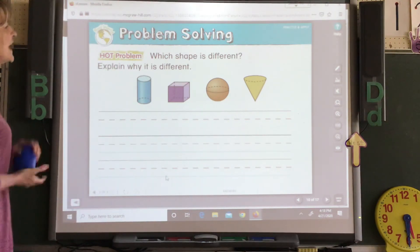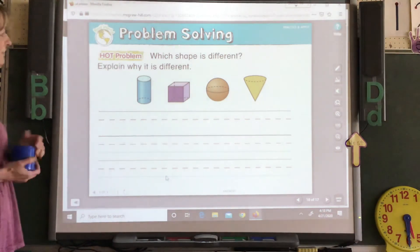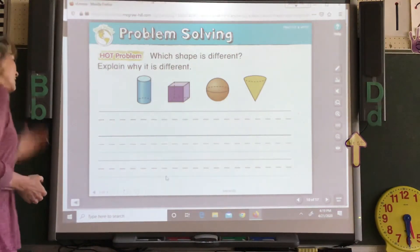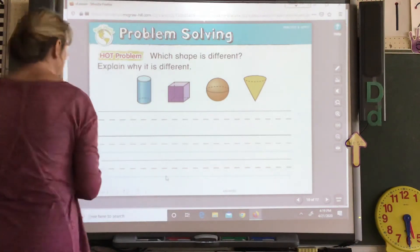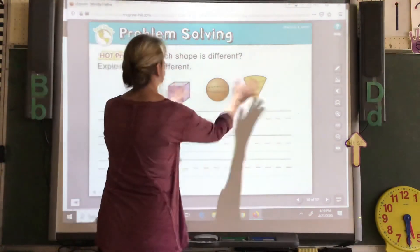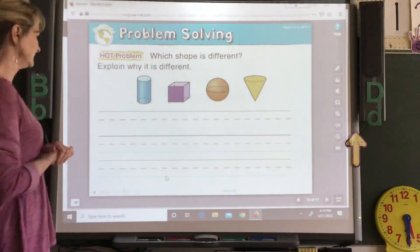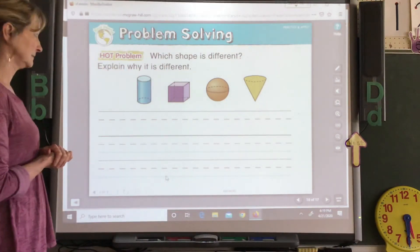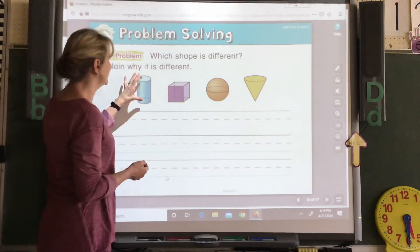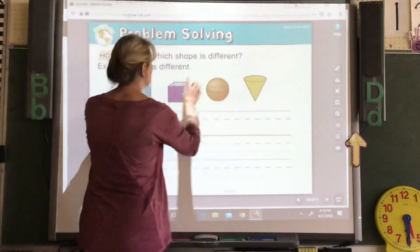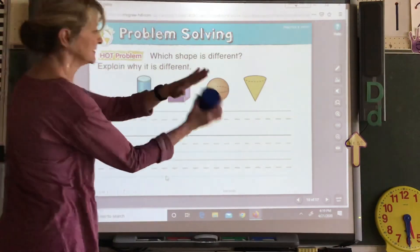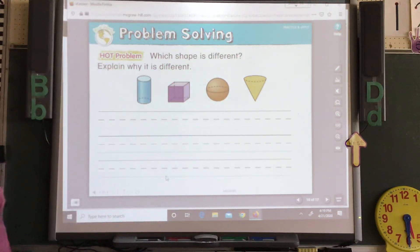Okay. Here's a hot problem. Which shape is different? Explain why it is different. So they are all different shapes. But, which one is completely different? Okay. Do all of these have faces? This one has faces. It has a face here and here. A cube. It has lots of faces.